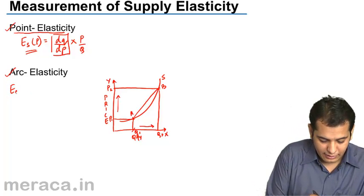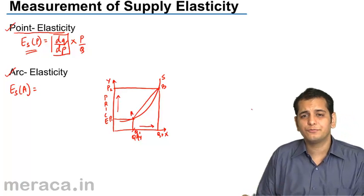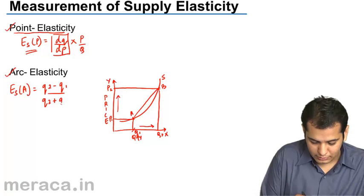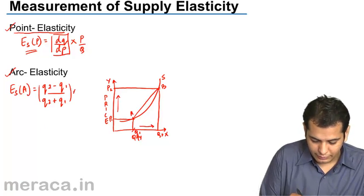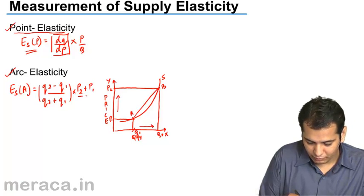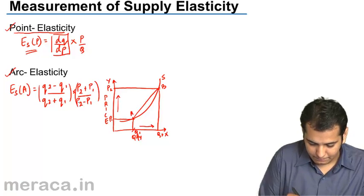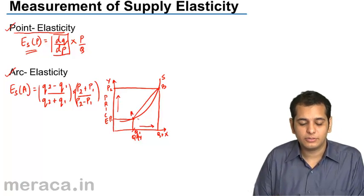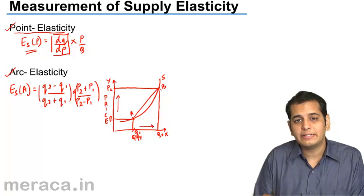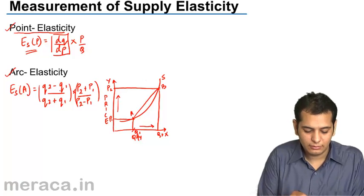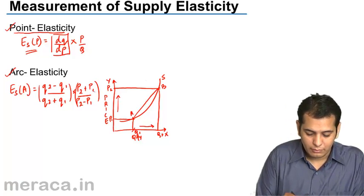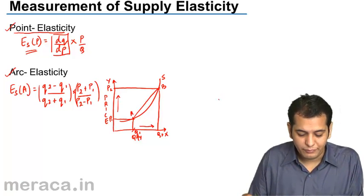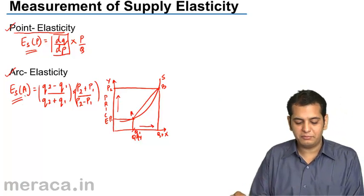Arc elasticity can be calculated with this formula. I can substitute these values with the numbers, where Q2 is the quantity demanded at an increased level, Q1 is the original quantity, P2 is the price at an increased level, and P1 is the original price. When I substitute these variables with the values, I get the elasticity of demand by arc method.